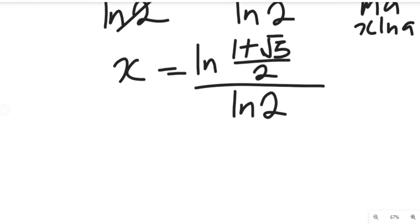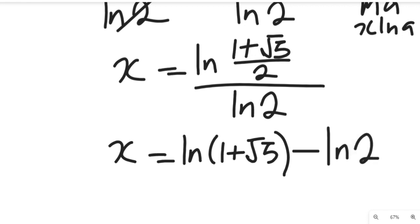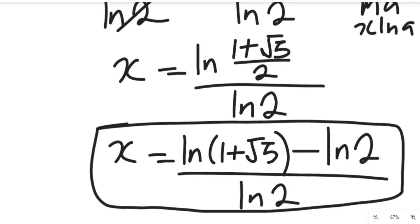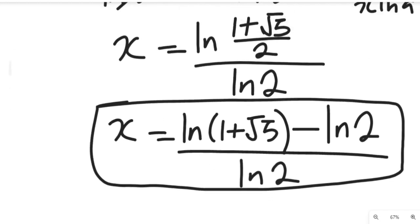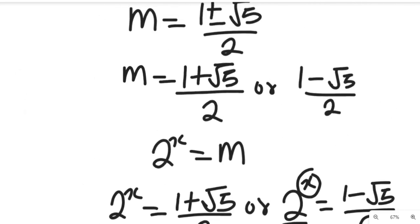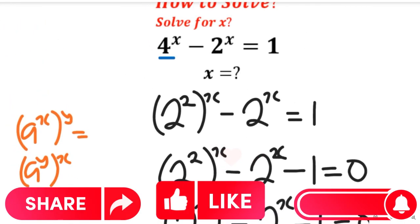Applying the division rule of logarithms, this expression gives us x equals the natural log of 1 plus root 5, minus the natural log of 2, all divided by the natural log of 2. This is the solution to the exponential equation. You can further simplify this to get the exact real value of x.